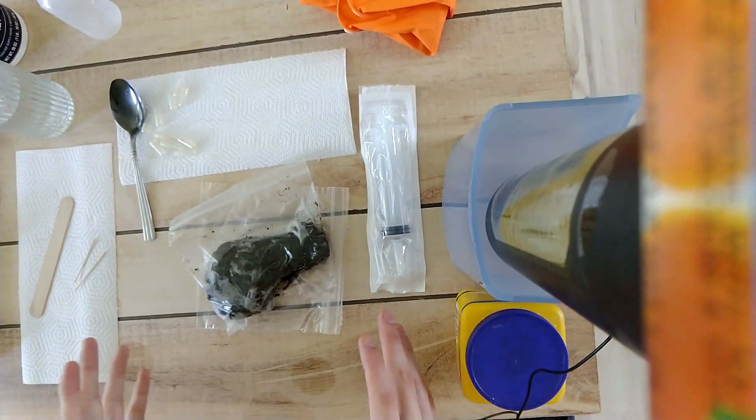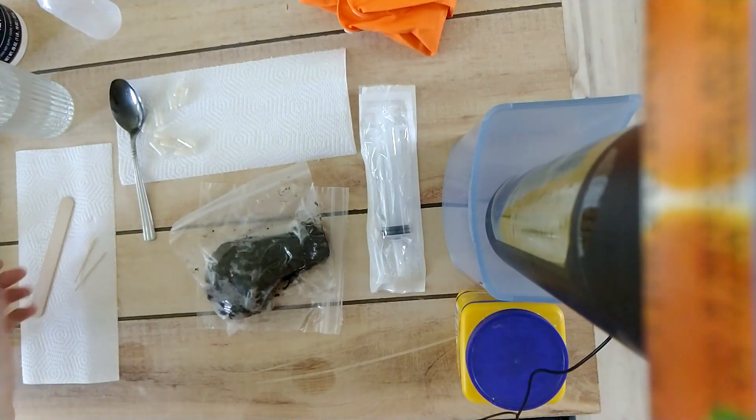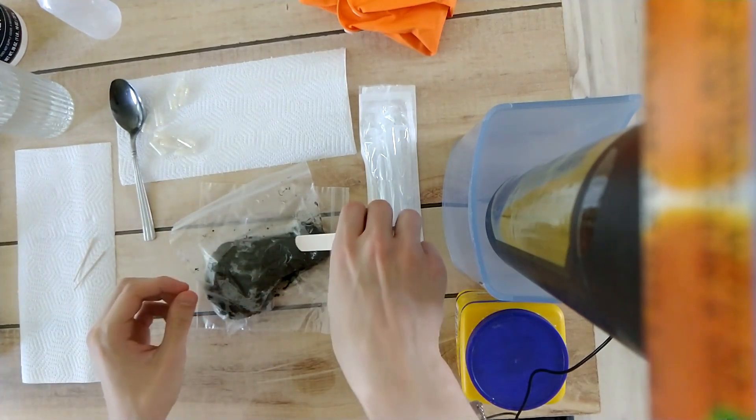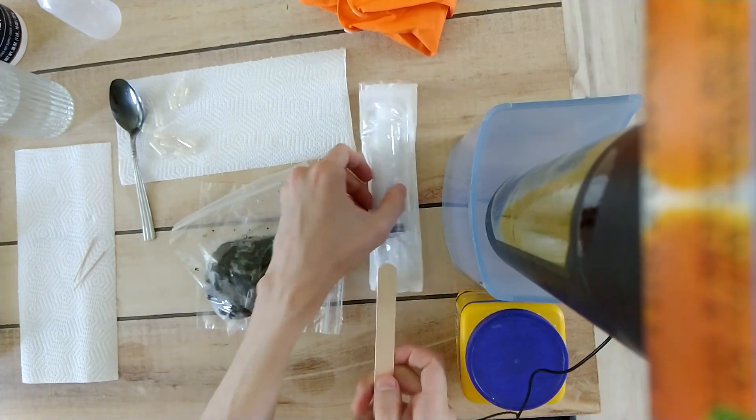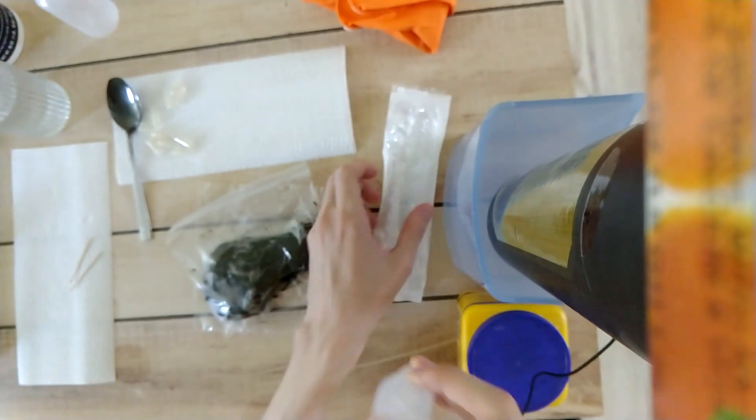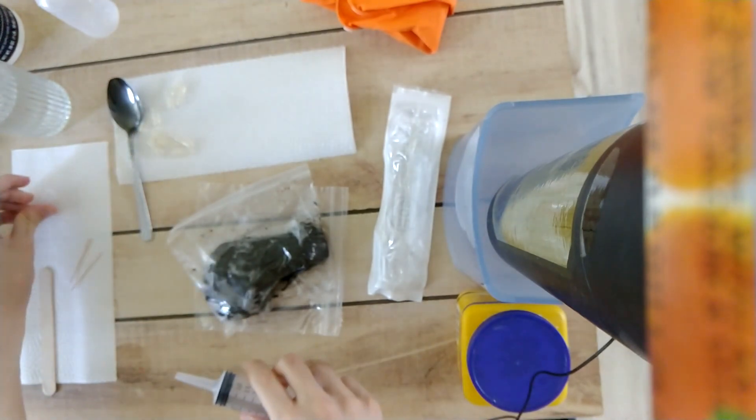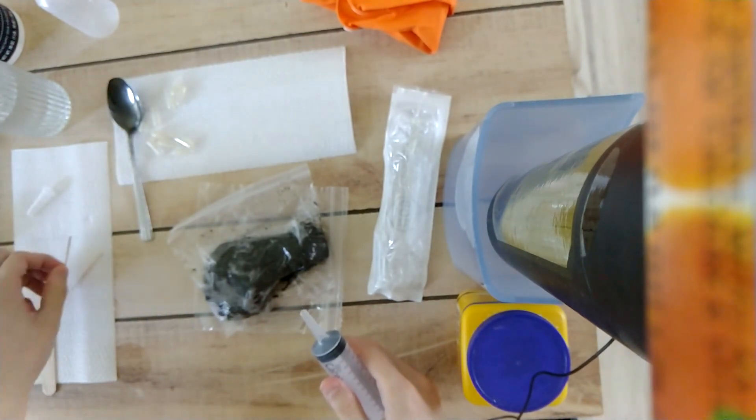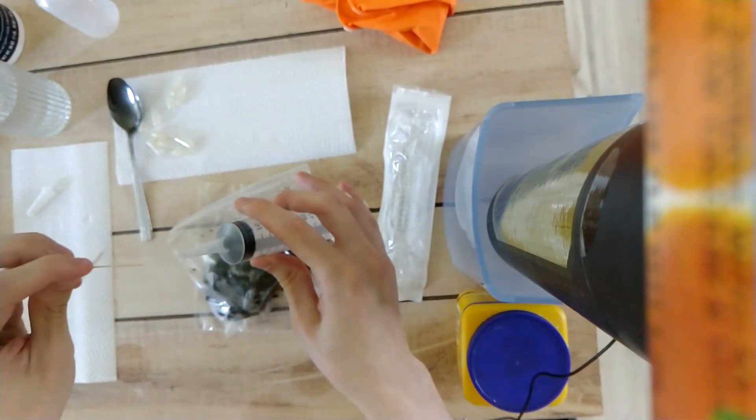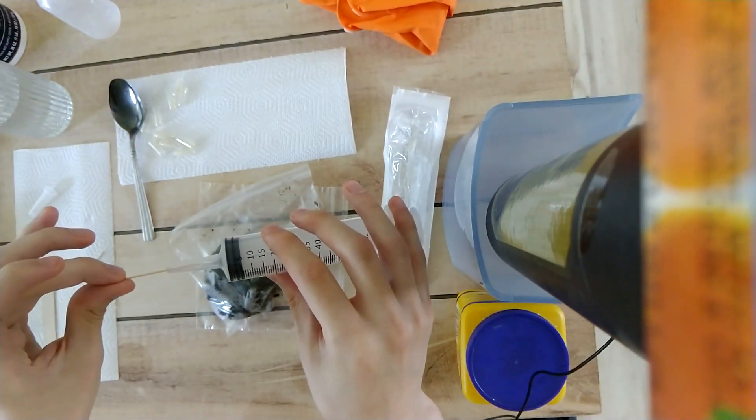And then we collect our ingredients here. Here we have the capsules, and here we have the wooden spoon which we'll use for scooping out the stool and putting it into our syringe. And here I have a couple toothpicks which I'll use in case the stool gets clogged up at the end of the syringe.